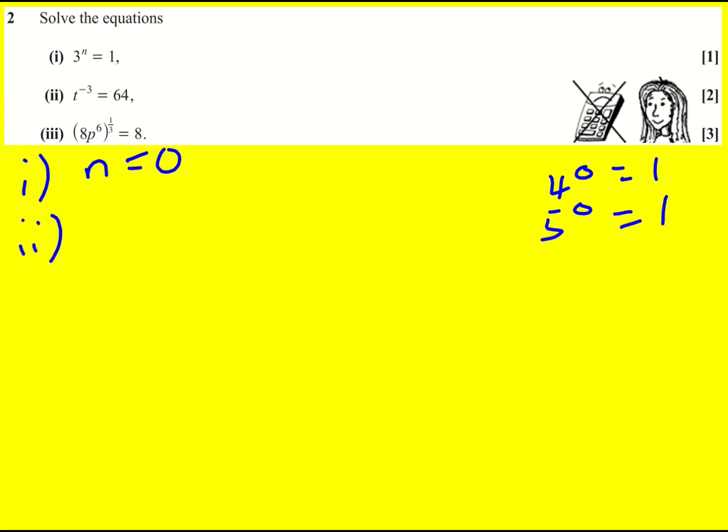On to part two. Now I can write this as 1 over t cubed is equal to 64. And then rearrange it by multiplying by t cubed and then dividing by 64 to give t cubed is equal to 1 over 64.